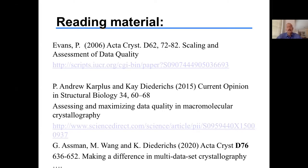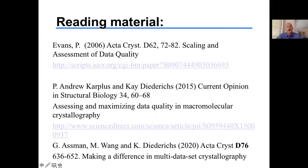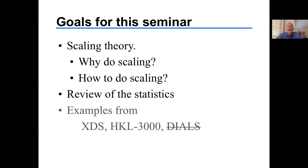I want to remind people to read these papers because textbooks do not go into this level of detail. Phil Evans has one on scaling and assessment of data quality. Andy Karplus and Kai Diederichs have one about maximizing data quality in macromolecular crystallography. And while preparing for today's talk, I came across Greta Osman, Mai Tian Wang and Kai Diederichs' paper from just a couple of months ago called 'Making a difference in multi-dataset crystallography: simple and deterministic data scaling selection methods.' I'll introduce that and ask you to review it in journal club.